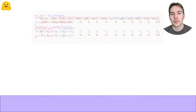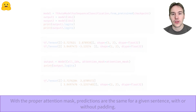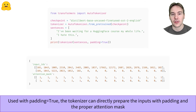Now, passing this attention mask along with the input IDs will give us the same results as when we send the two sentences individually to the model. This is all done behind the scenes by the tokenizer when you apply it to several sentences with the flag padding equal true. It will apply the padding with the proper value to the smaller sentences and create the appropriate attention mask.